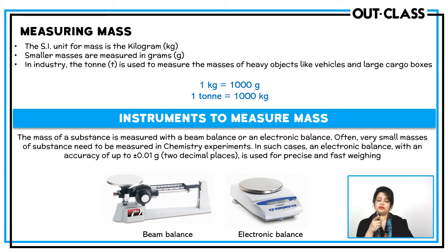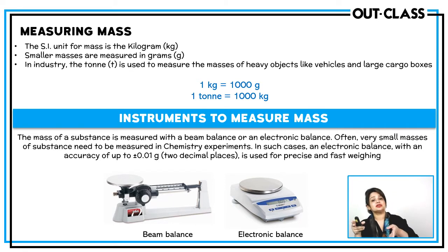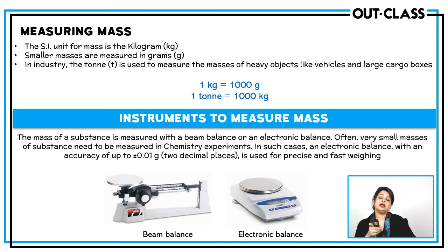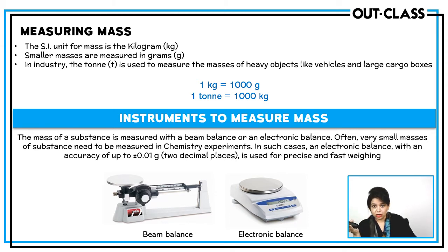Remember: if one quantity's mass is given and you have to calculate the mass of another quantity, then you don't change the unit — you can keep tons on both sides since the same quantity is being measured. But if mass is given and you have to calculate volume or concentration, then you must convert the unit of mass to grams.